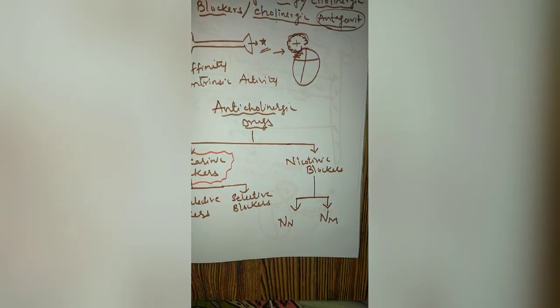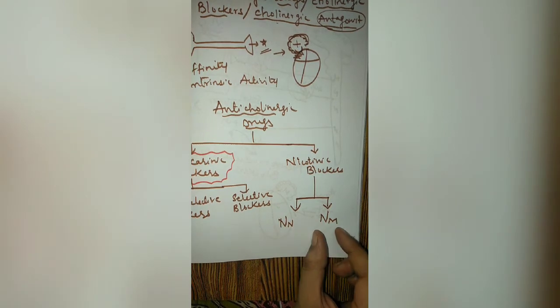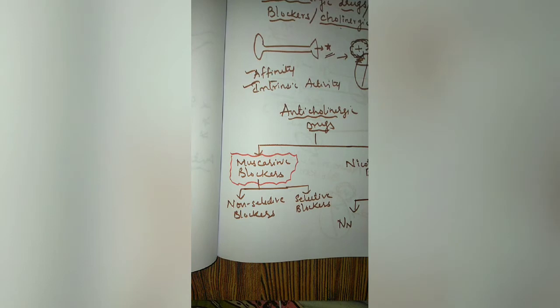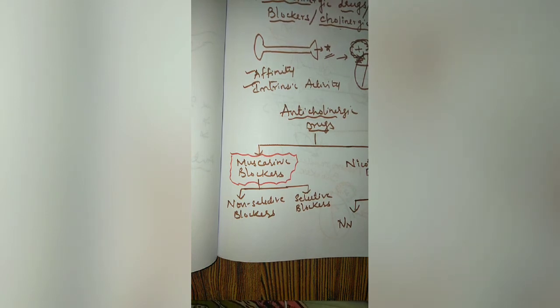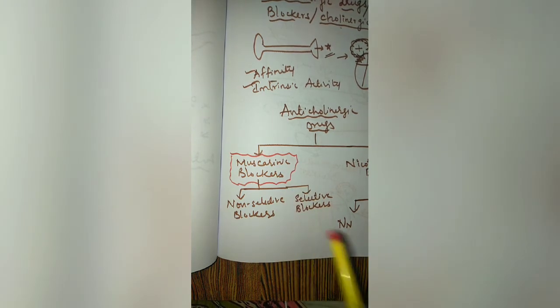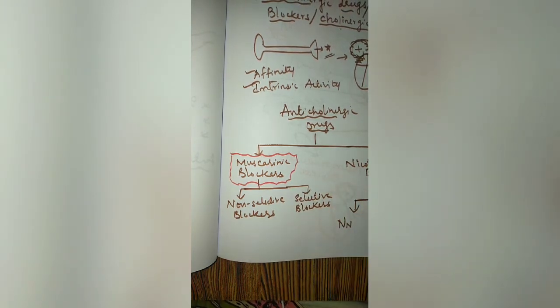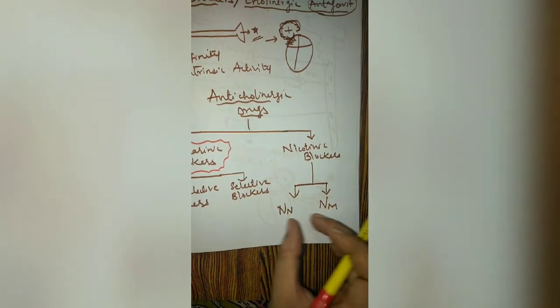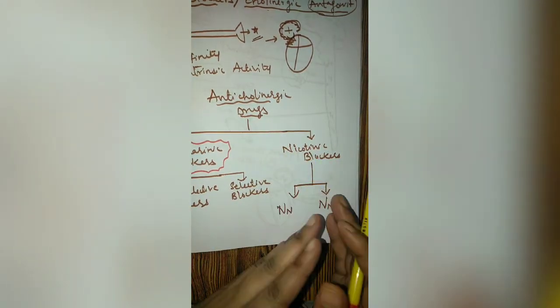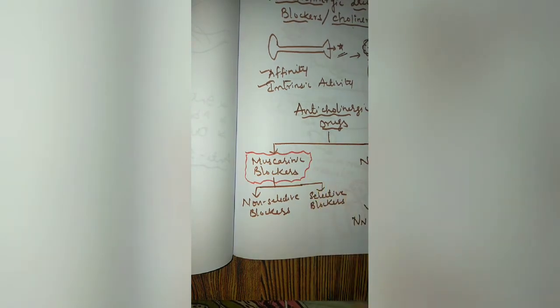In anticholinergic drugs, our main focus will be muscarinic blockers. Nicotinic blockers will be studied separately under drugs acting on the autonomic ganglion and neuromuscular blocker drugs. In an exam, if asked to write about parasympathetic drugs or anticholinergic drugs, you should mainly write about muscarinic blockers — it does not include nicotinic blockers, which have a separate topic.